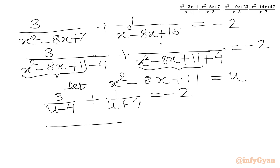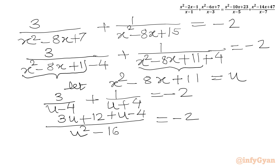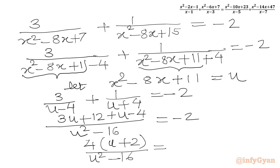We take LCM to get: (3u plus 12 plus u minus 4) over (u squared minus 16) equals negative 2. That simplifies to 4u plus 8 over (u squared minus 16) equals negative 2. Factoring out 4 from the numerator gives: 4(u plus 2) over (u squared minus 16) equals negative 2.